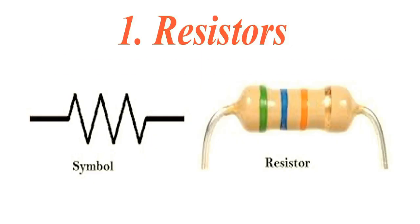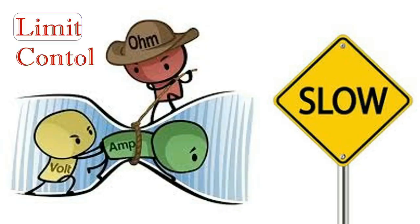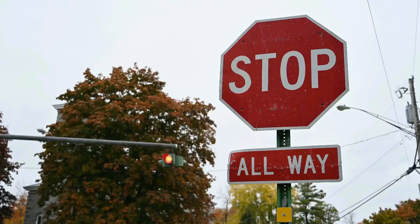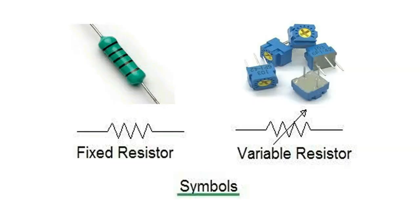Resistors. The resistor is probably the most common component you will find. Its job is to limit or control the flow of electric current in a circuit. Think of it like a traffic controller, slowing down the flow to protect other components. We measure resistance in ohms.